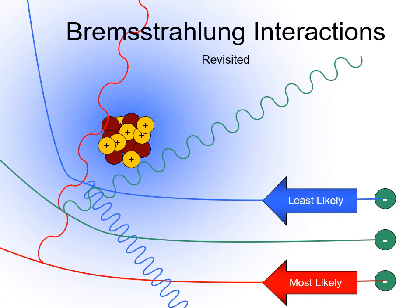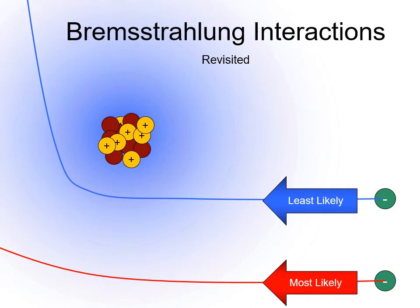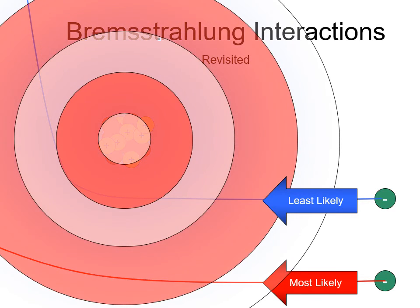Of the three interactions, which is most likely and which is least likely to occur? Think of the atom as a giant dartboard with a bullseye centered over the nucleus. Now ask the question, which part of the board is easiest to hit?